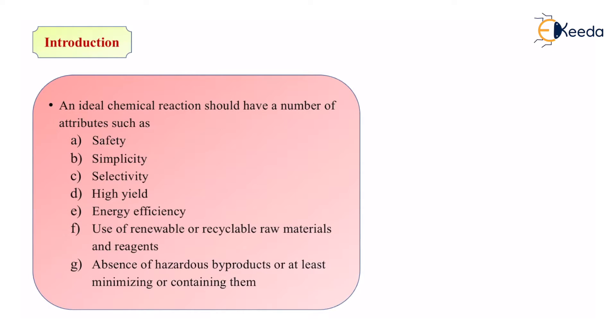Next is energy efficiency. It should not consume a lot of energy. Now energy can be in many forms. It can be light energy, heat energy, electricity. But the amount of energy consumed by that particular reaction should not be very high. Next is use of renewable or recyclable raw materials and reagents. The more renewable substances we use, the more recyclable substances we use, substances which can be renewed, which can be recycled easily, such substances will help us in making the reaction better.